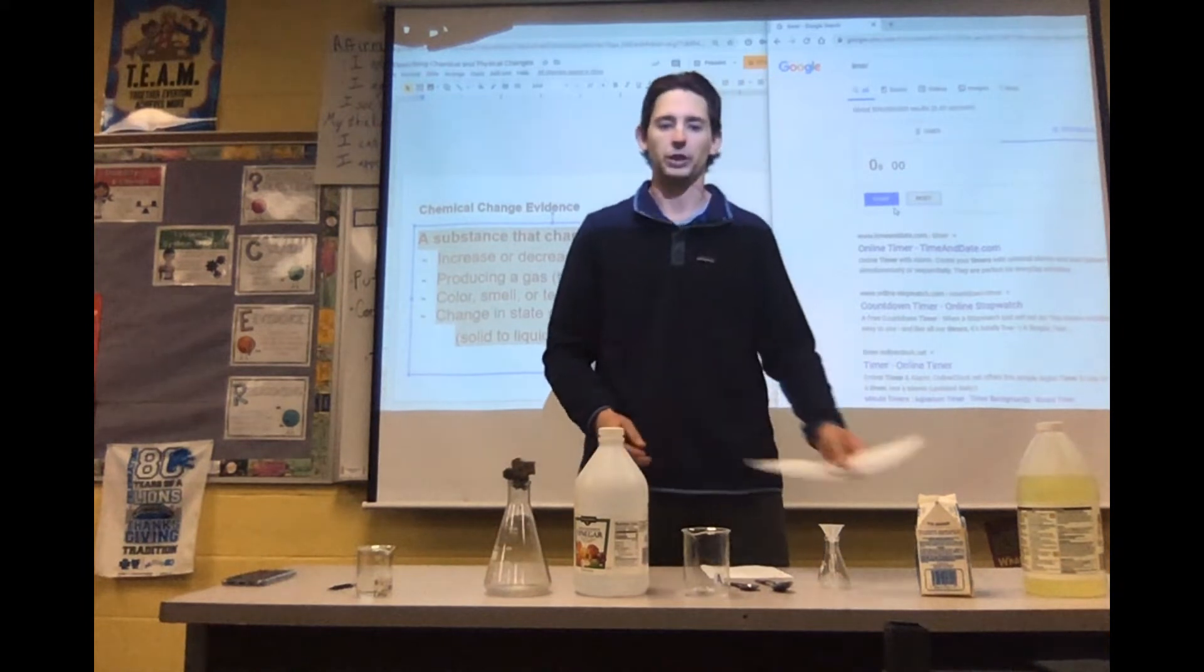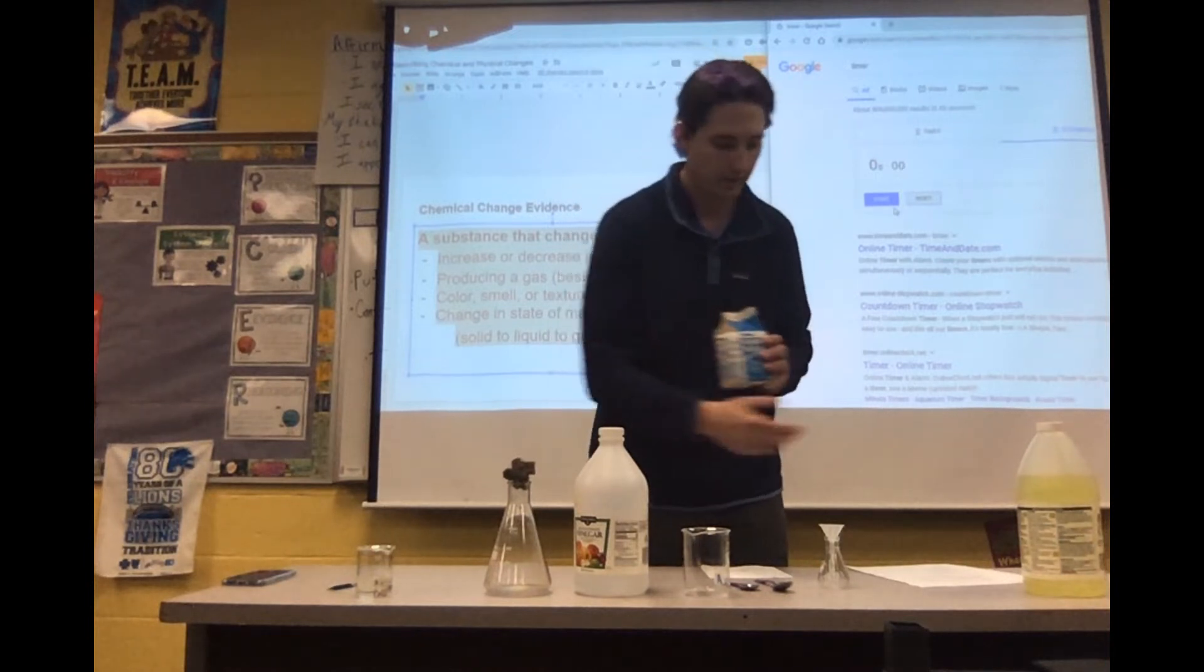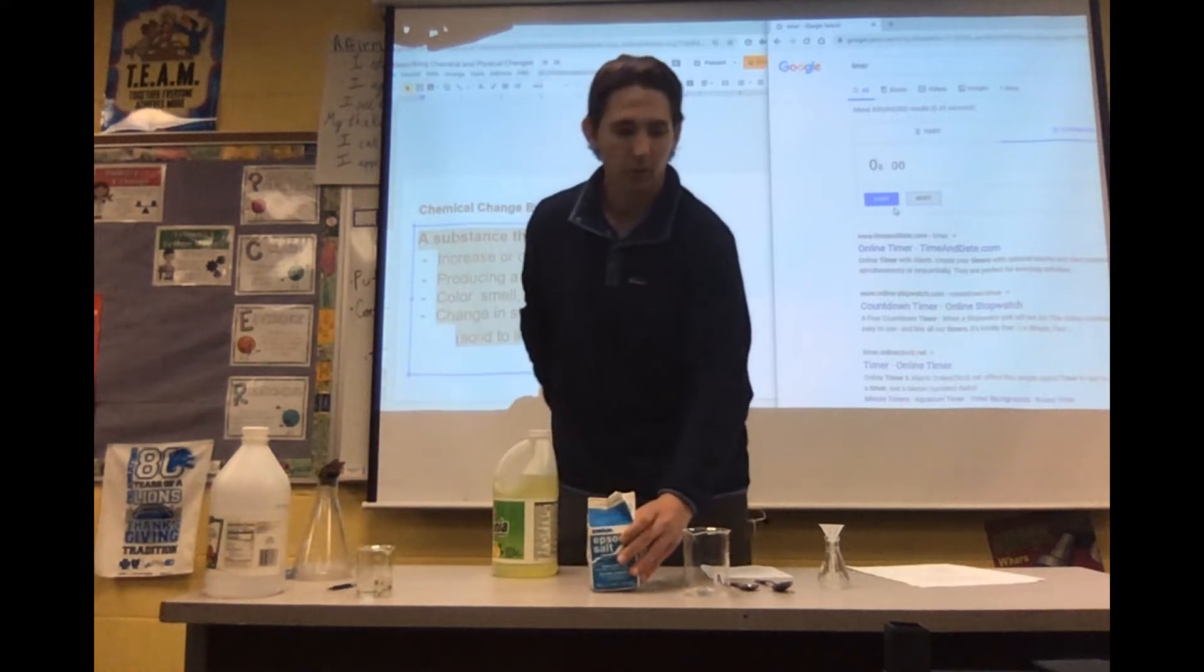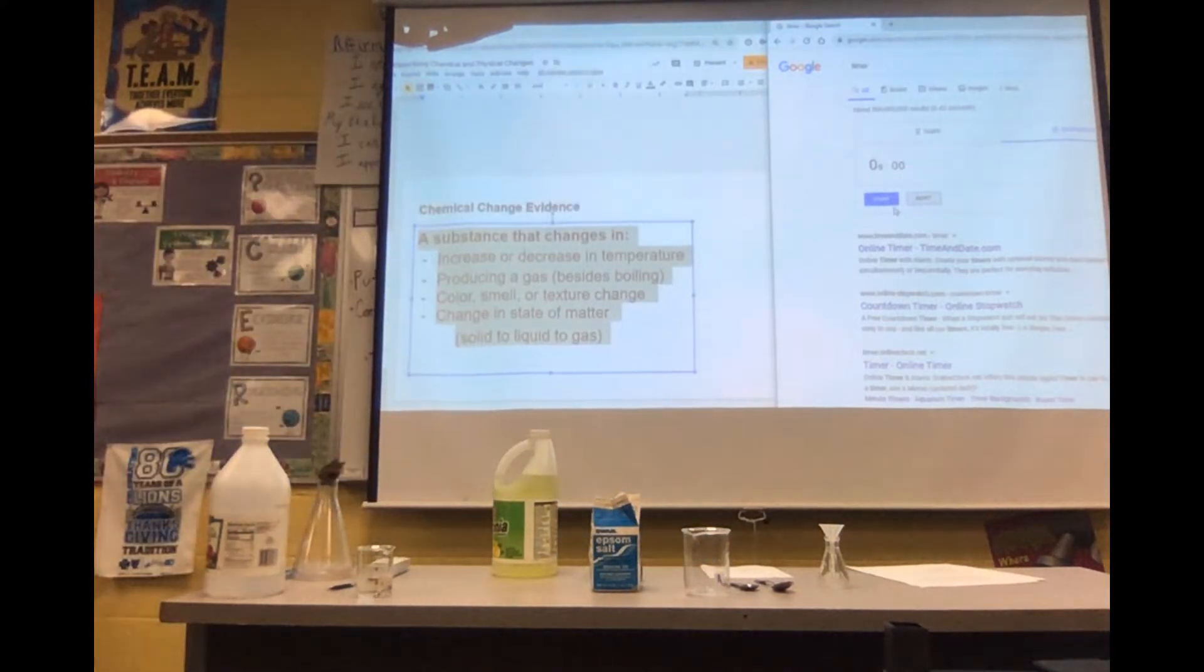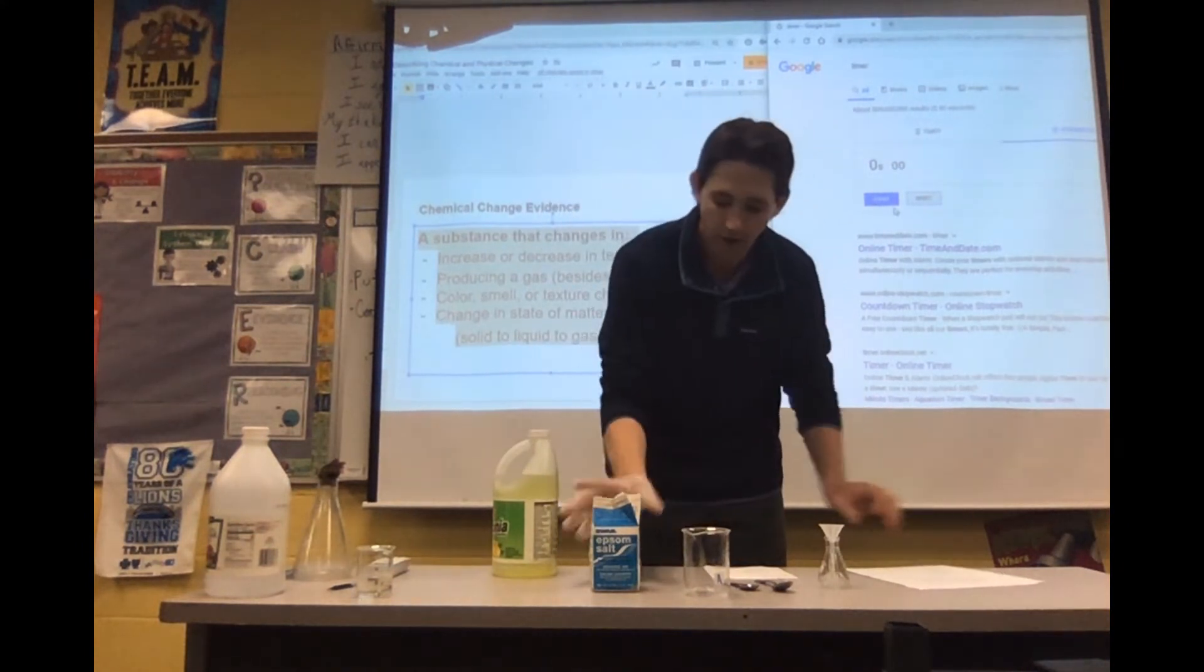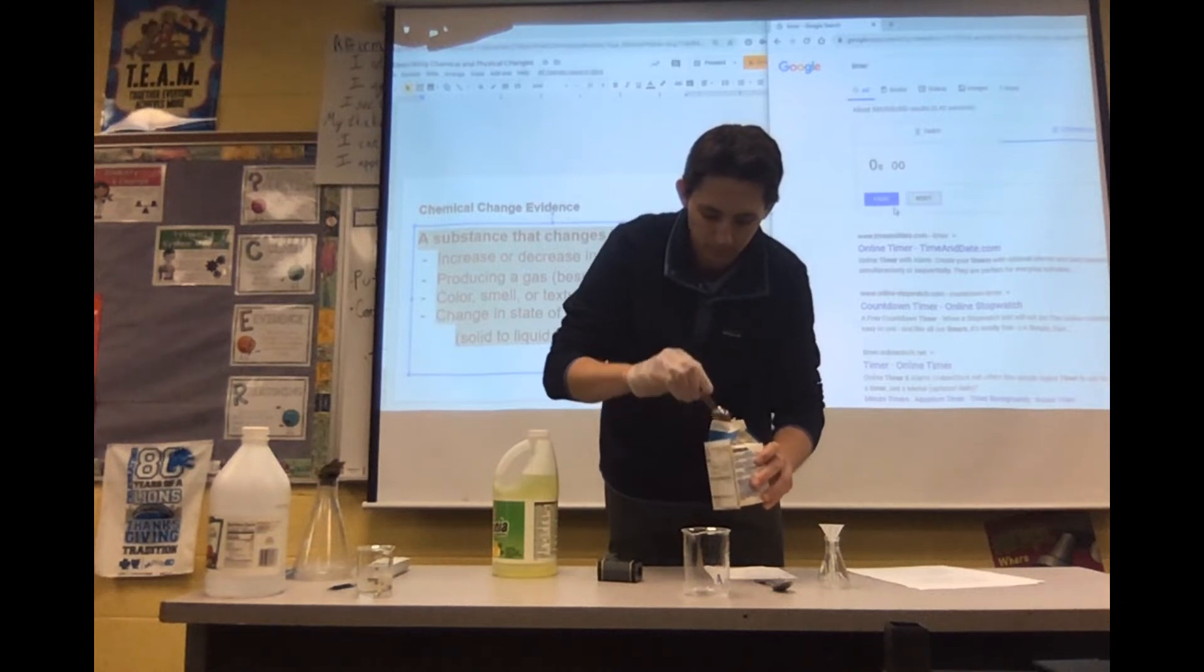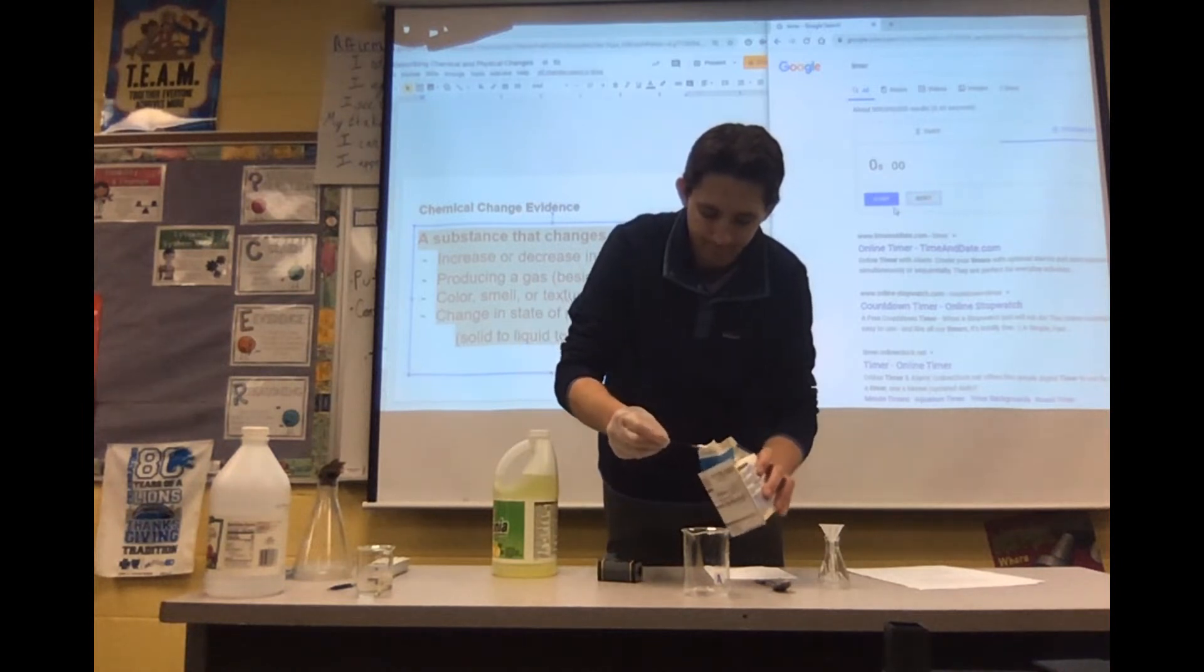So what we will be doing is mixing epsom salt and ammonia. Ammonia is a pretty strong household cleaner. I definitely do not want to mess with it, so I am going to get some gloves so I don't get it on my hands. Safety first. I am back, so what it says is one teaspoon of magnesium sulfate or epsom salt. Here we go.